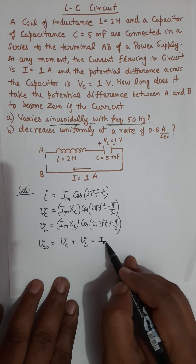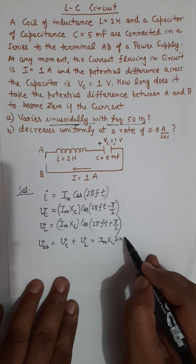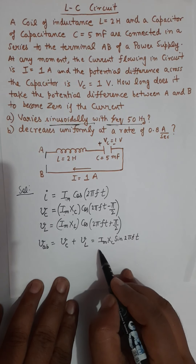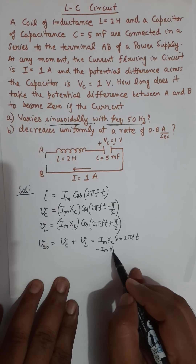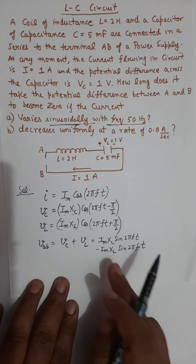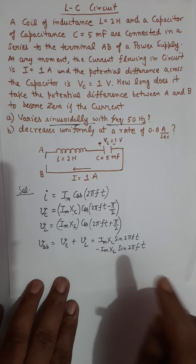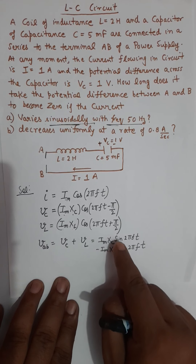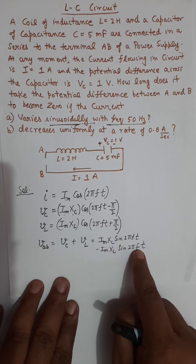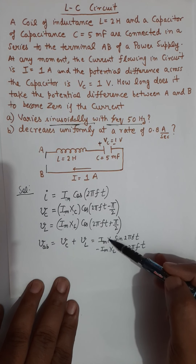Here it is I_max times X_C and I_max times X_L. This factor can be written as sin(2πft) and the second factor will be minus I_max times X_L times sin(2πft). I want this value to be 0. If this value has to be 0, there are two possibilities. Either X_C and X_L are equal, because all other parameters are similar.